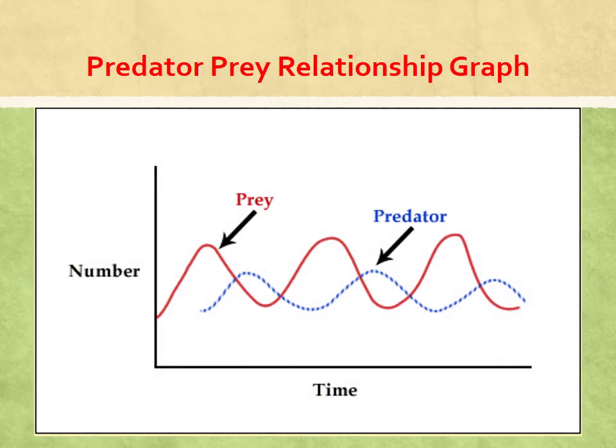Looking at this graph, the prey population on the far left is high, so predators move in and start eating them. The predator population goes up because they have plenty of food, and as it does, the prey population goes down. At some point the prey population drops so much that predators no longer have enough food, so their population goes down too. As the predator population falls, the prey population rises again because they're not being eaten as much — they have a direct relationship on each other.